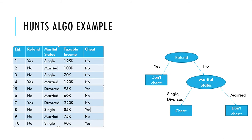To achieve that goal, we need to think about reducing the impurity at each node as much as possible. Let us understand that with an example. On the right side we have a decision tree — on the refund attribute, we have the left child. Whenever refund equals yes, we get a single output: no, meaning the person is not cheating.